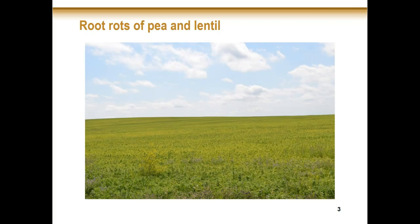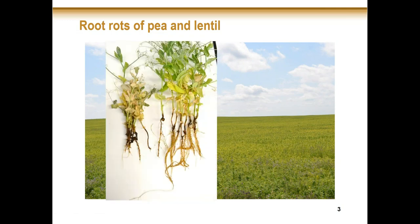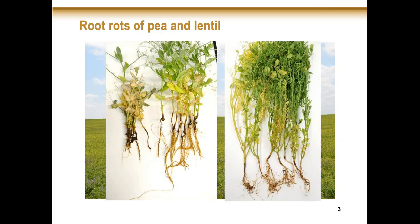Starting with a general introduction of root rot of pea and lentil — by now we all know that this has been a widespread problem in the prairies: Alberta, Saskatchewan, and Manitoba since about 2011, 2012. We really started to see those pick up in 2013, where we see extensive yellowing of field crops, often starting in patches and then spreading throughout the whole field. When we pull those roots for both peas and lentils, we see a lot of degradation and decay of the root system, particularly for peas in advanced stages — you'll often see that there's no roots left at all, a huge loss of root mass, honey caramel browning, and often blackening of the taproot.